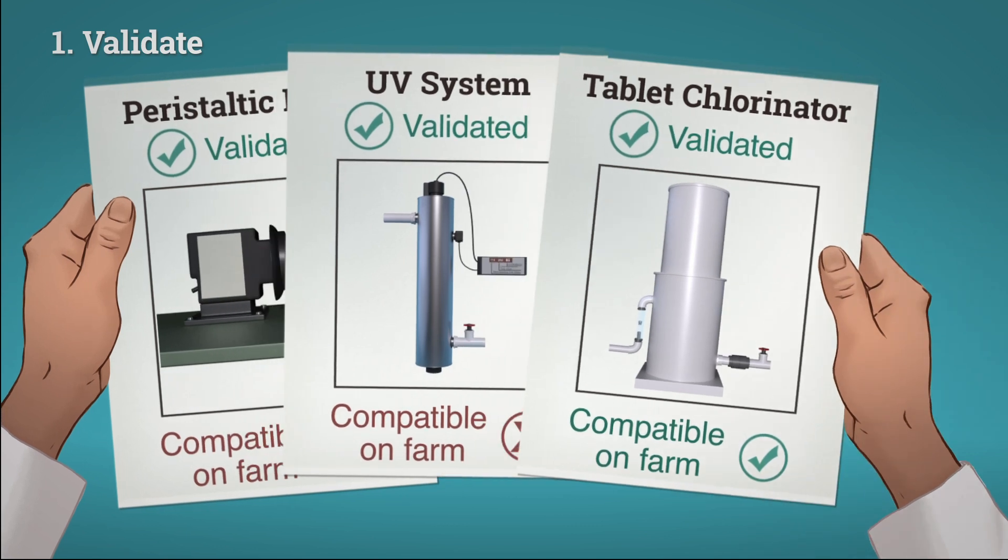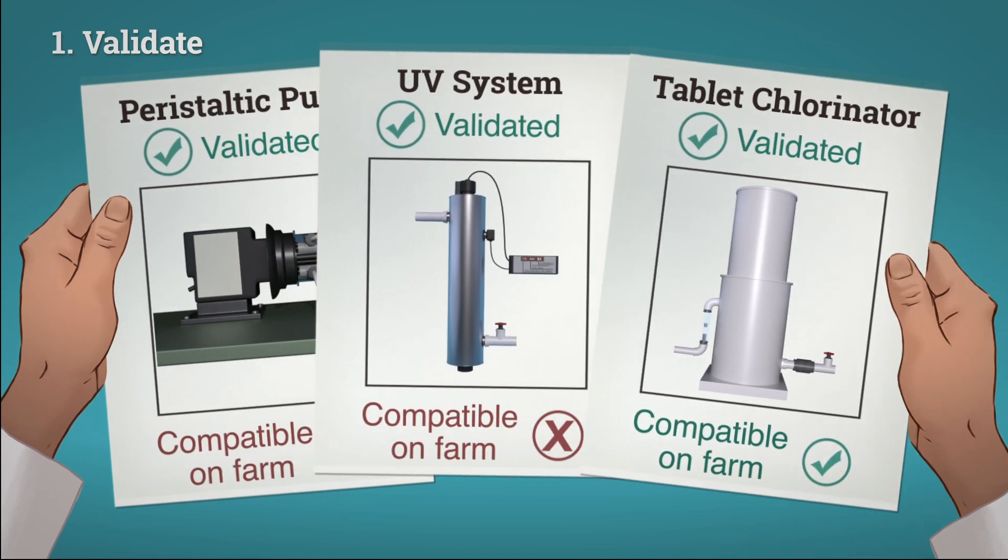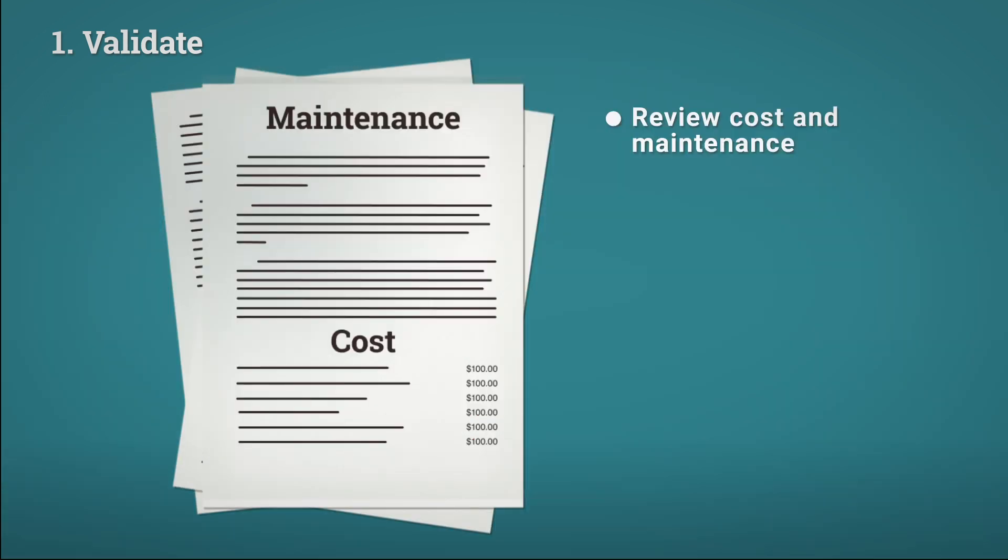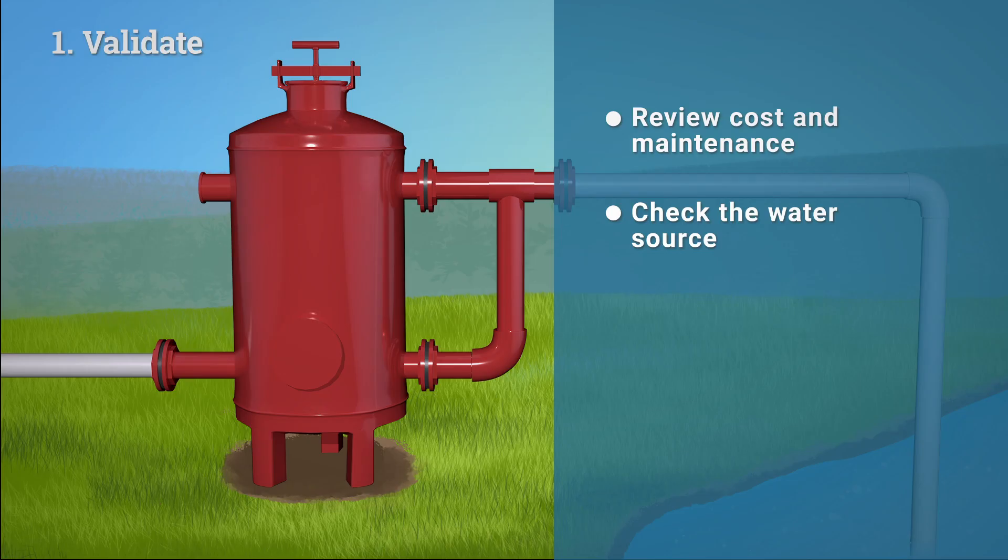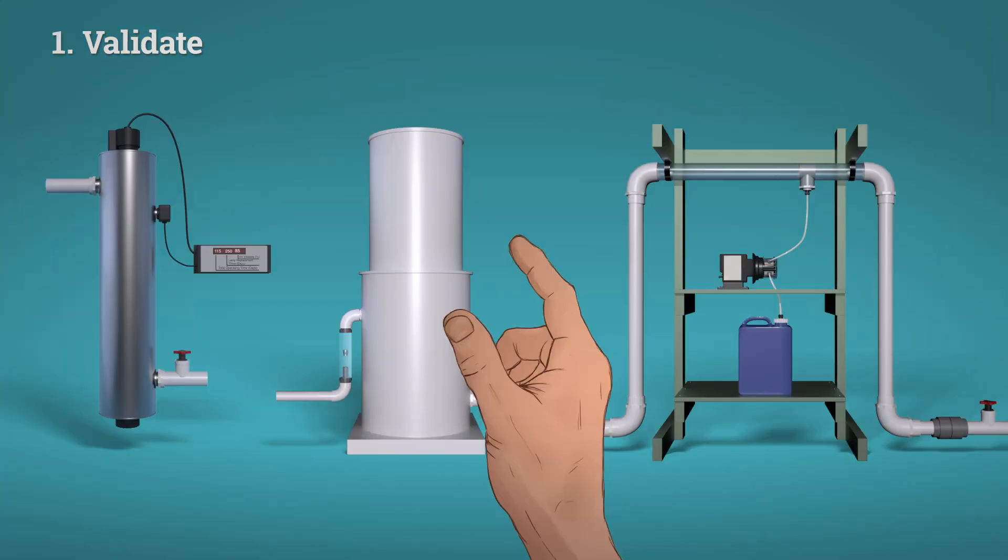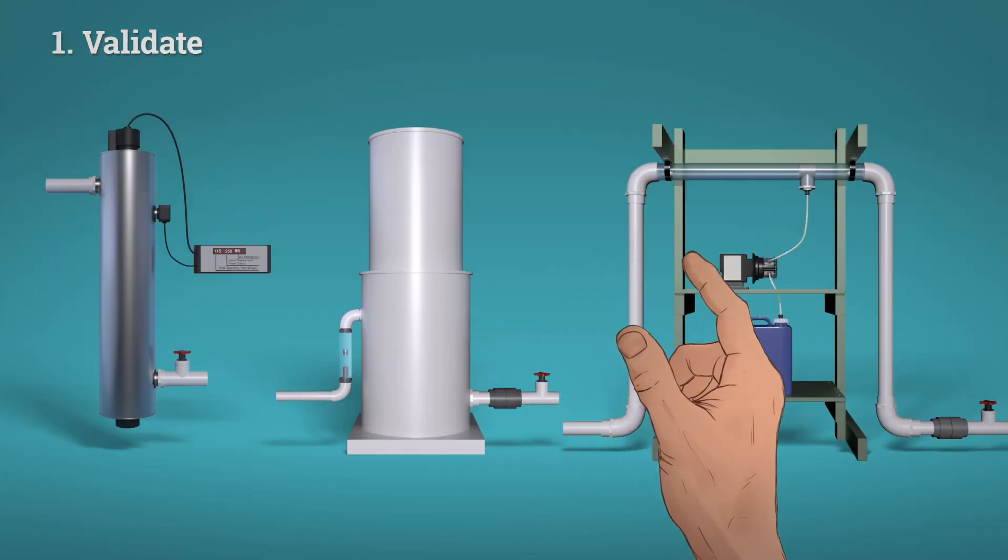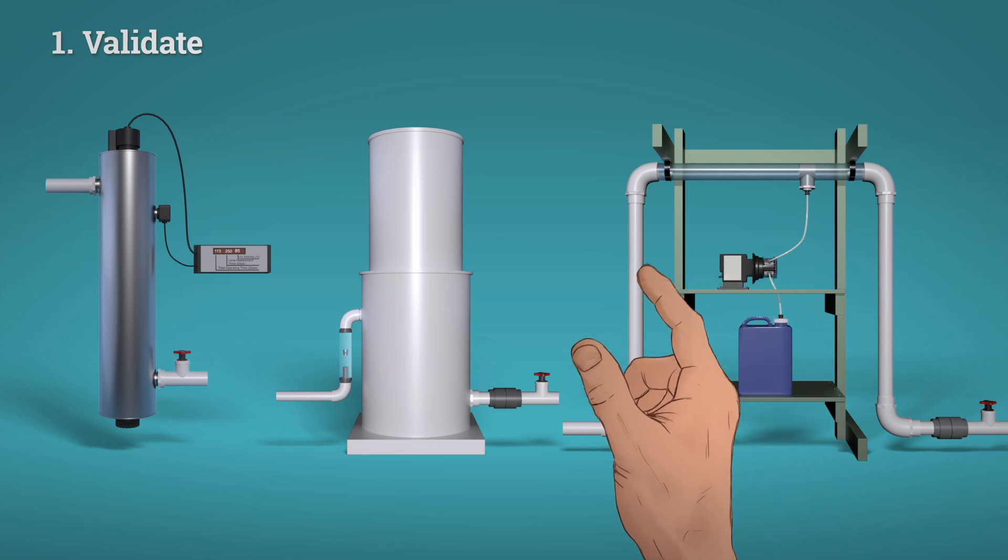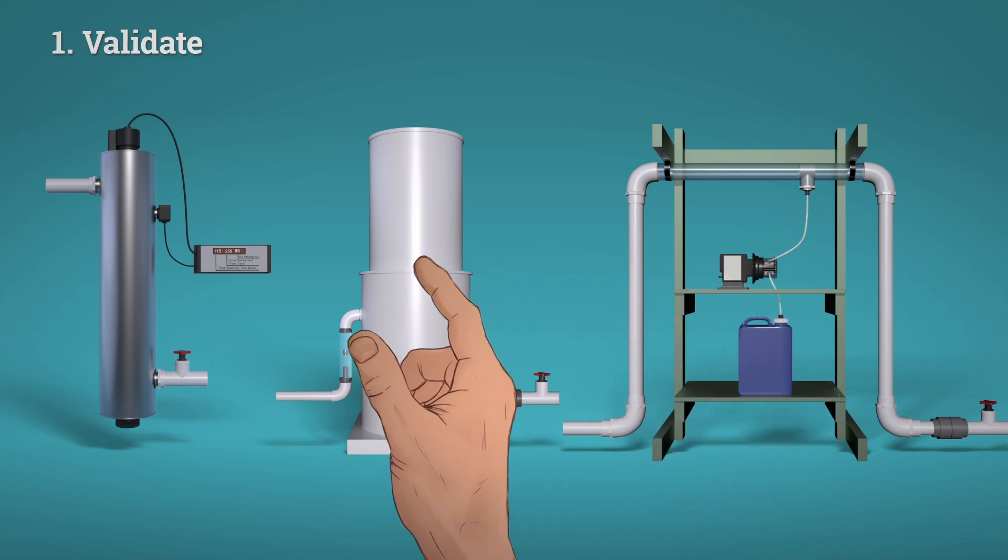Finding the right system that meets your needs requires some planning. In addition to the system being validated for treating agricultural water, there are pros and cons based on cost and maintenance, your water source, water quality, and soil type. If you're having trouble selecting the right system, discuss options with your extension agent or food safety specialist.